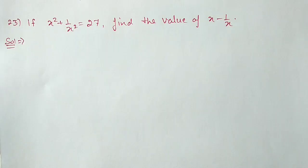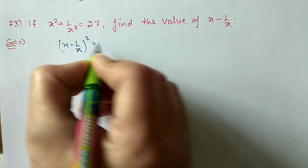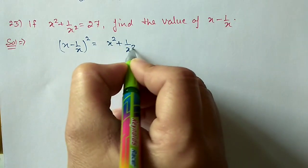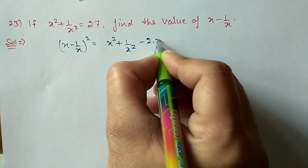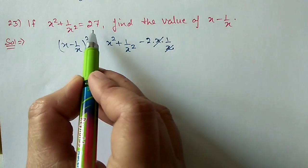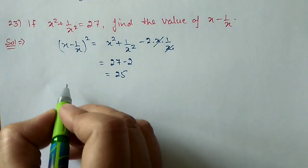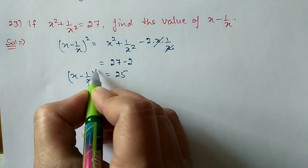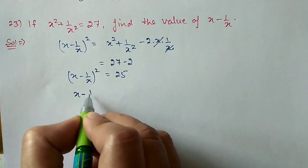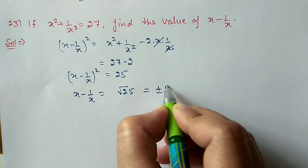Question 23: If x square plus 1 by x square is equal to 27, find the value of x minus 1 by x. We use the formula x minus 1 by x whole square equals x square plus 1 by x square minus 2 into x into 1 by x. The x terms cancel, and substituting 27: x minus 1 by x whole square equals 27 minus 2, which is 25. Therefore x minus 1 by x equals root of 25, which is plus minus 5.